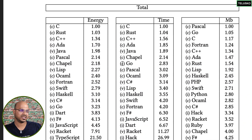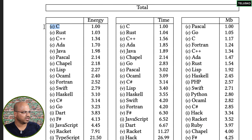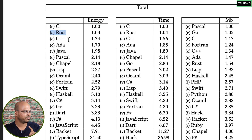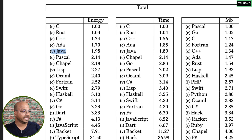Looking at the overall energy efficiency ranking: C is number one. Then we have Rust, C++, Ada, and Java. Among modern and widely-used languages, the top five are C, Rust, C++, and Java — Ada is mostly no longer in use. In terms of execution speed, the ranking is almost identical.